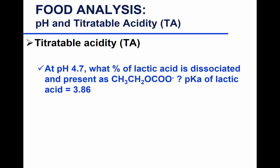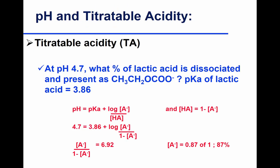So x equals 6.91 divided by 7.91, which gives about 0.87, or 87.35%. So approximately 87% of the lactic acid is dissociated. You can either put 1 for total concentration and convert to percentage later, or put 100 and get the percentage directly — either way is correct.